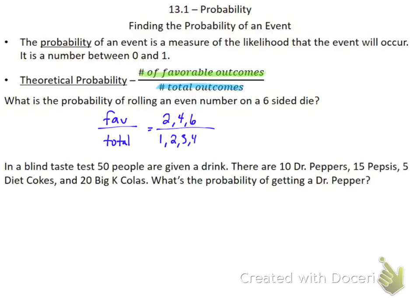So one, two, three, four, five, and six. I have three favorable outcomes on the top, and the total is six on the bottom. So this would be one-half, or you can divide one by two and get 0.5, which is 50%.